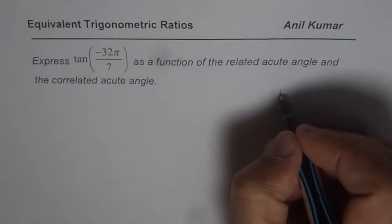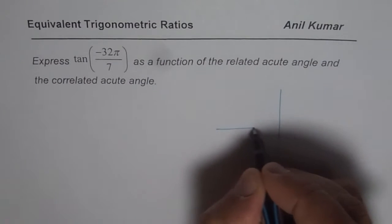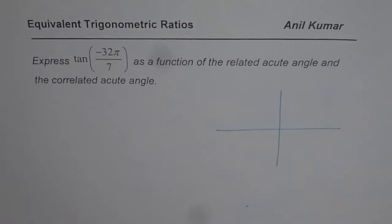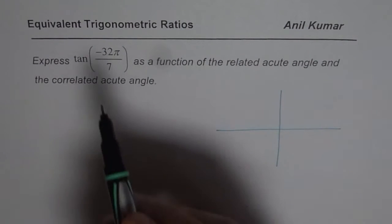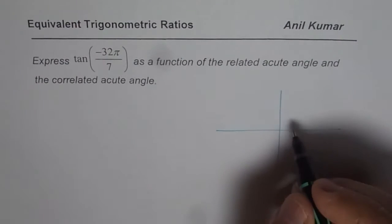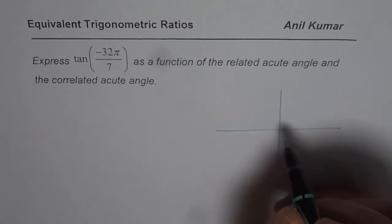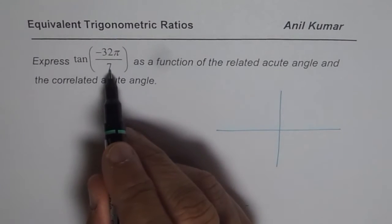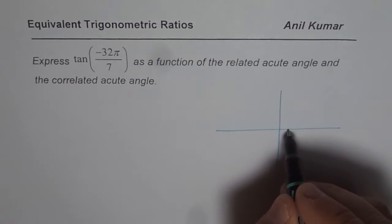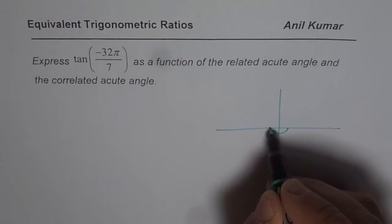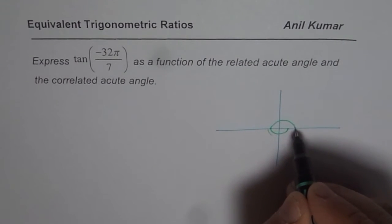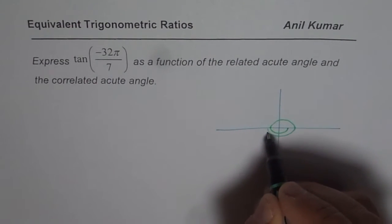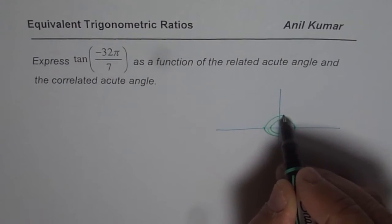Now that is how we do it. So it is just sketch and then what do we need? We need tan of minus 32π. Minus indicates that you are moving clockwise direction. 32π means over 7. So π by 7. So this π is divided into 7 portions. So 1 round will give you 7 and then 14 and then 21 and then 28.